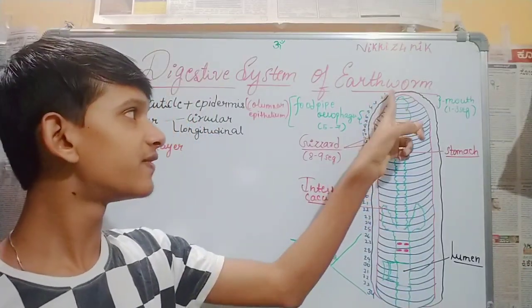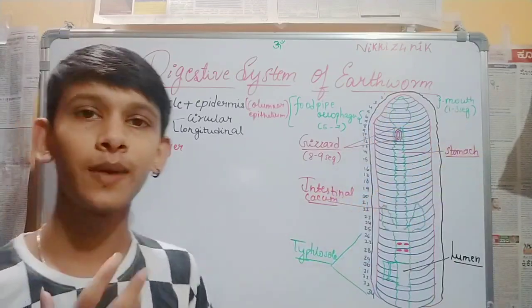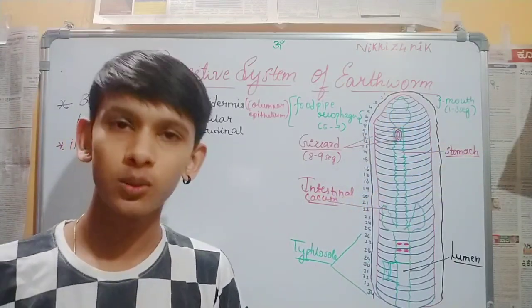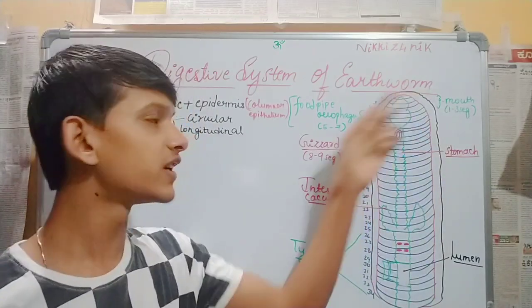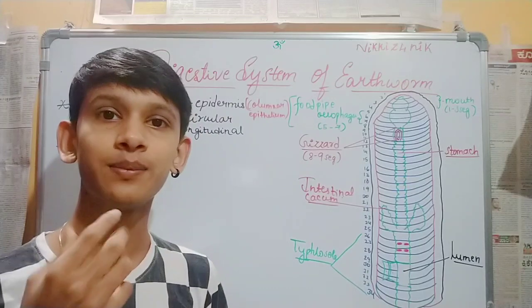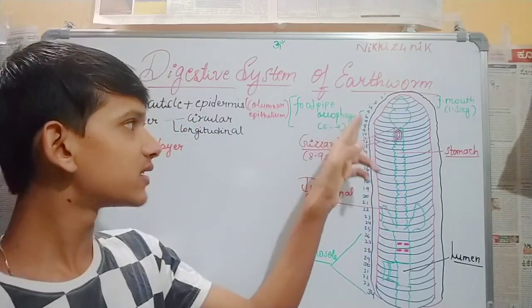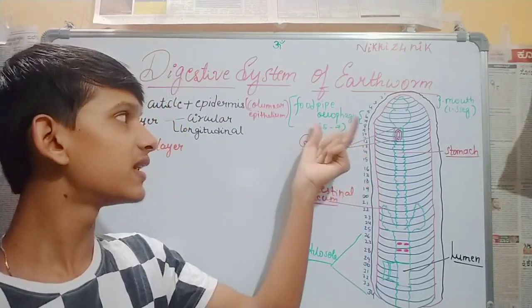First of all, we have a mouth in the first three segments. Segments are very important. There are direct questions about the segments. In the fifth to seventh segment, there is pharynx.